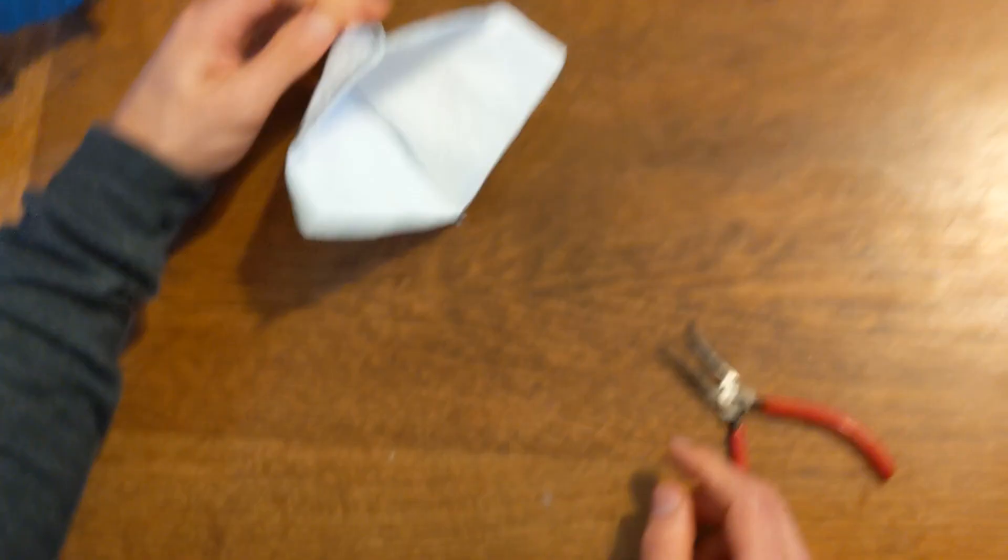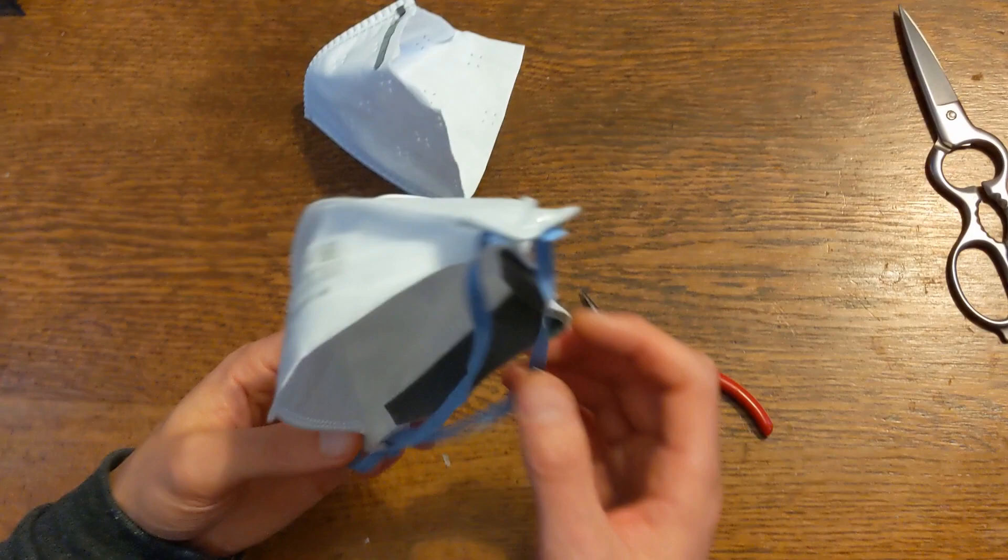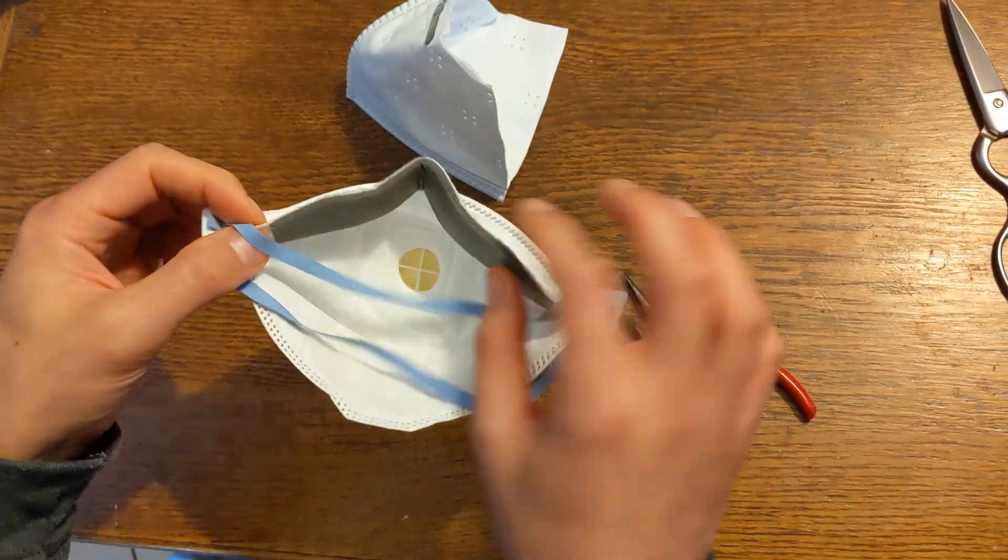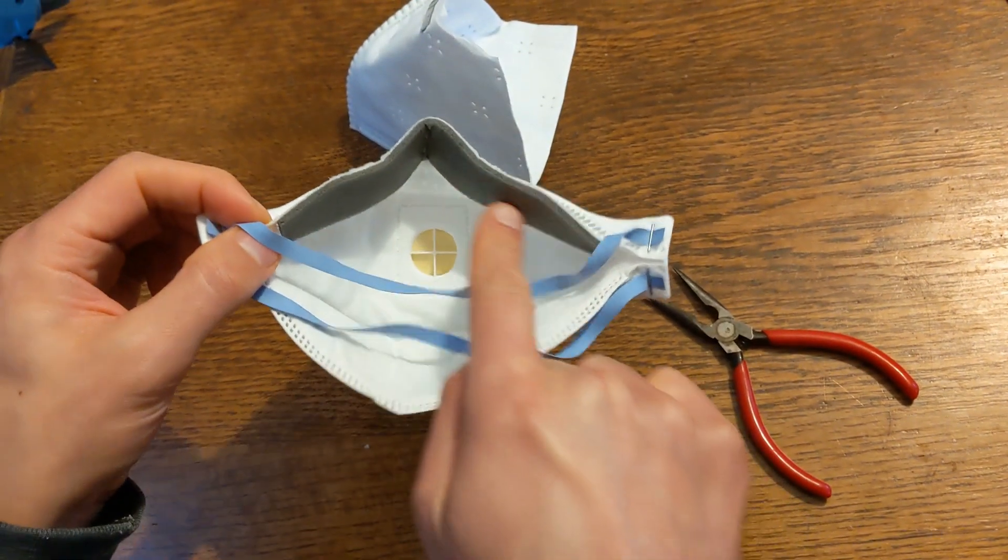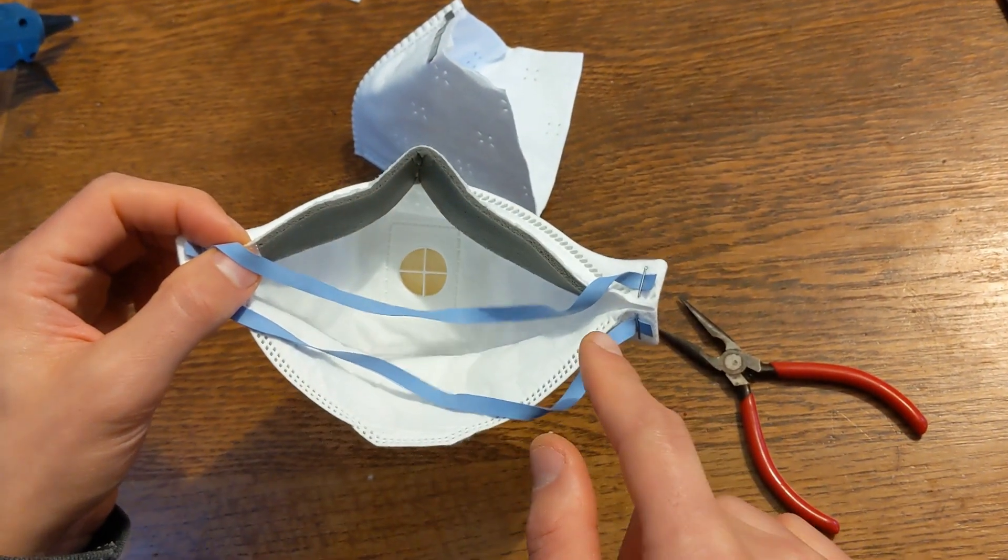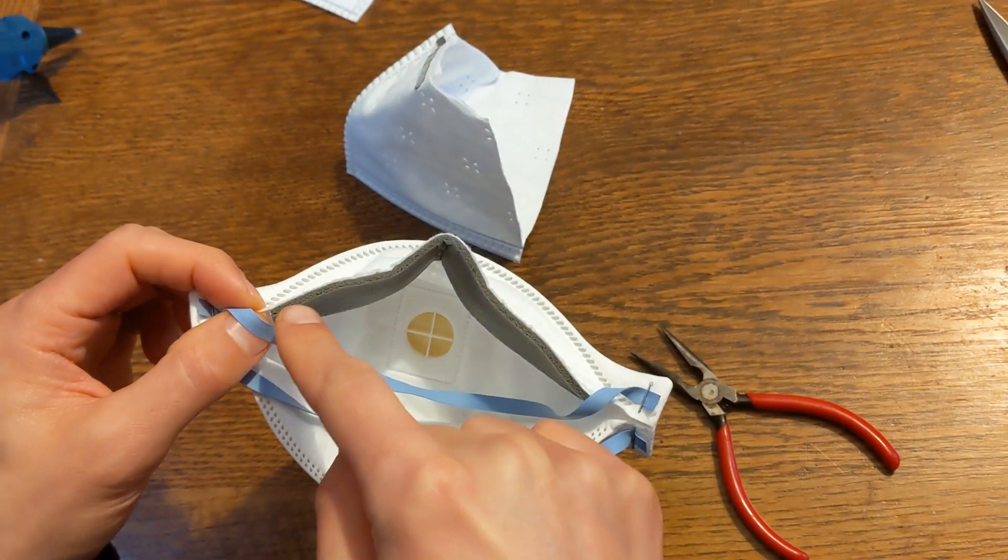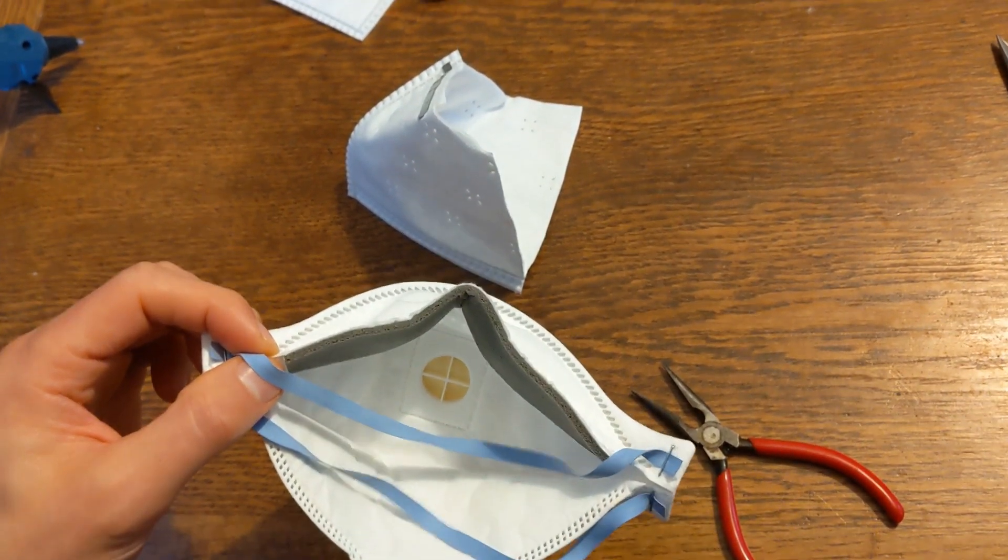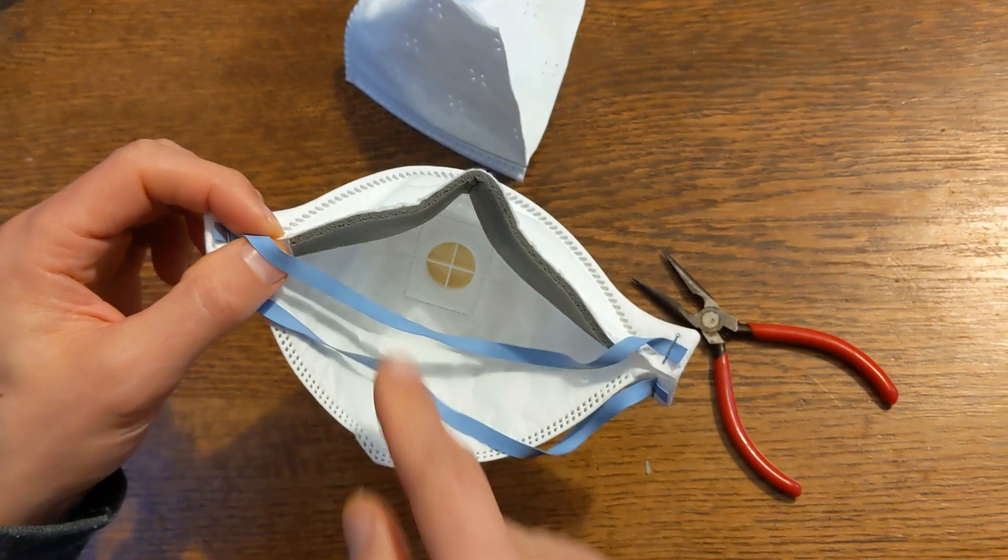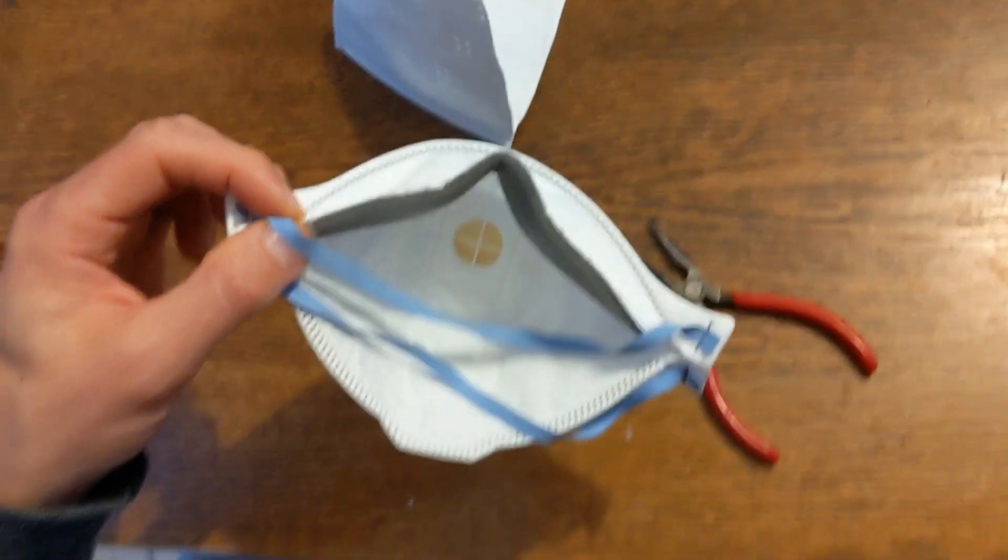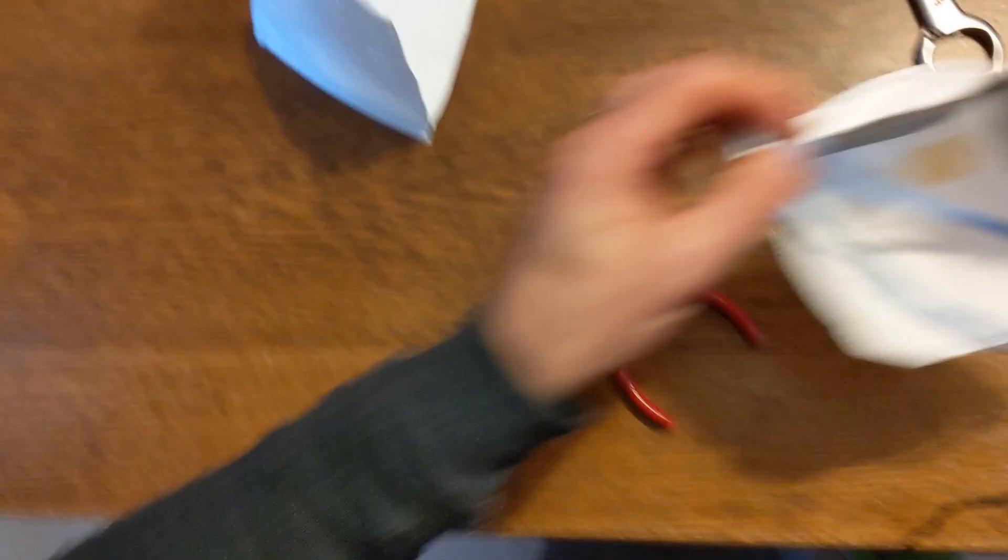If you look at the N95 mask, you will notice that under the bridge there is a piece of foam over here. The piece of foam is designed so that the air cannot bridge gaps between your cheeks and the mask, and it's a good idea to do this with our mask as well.